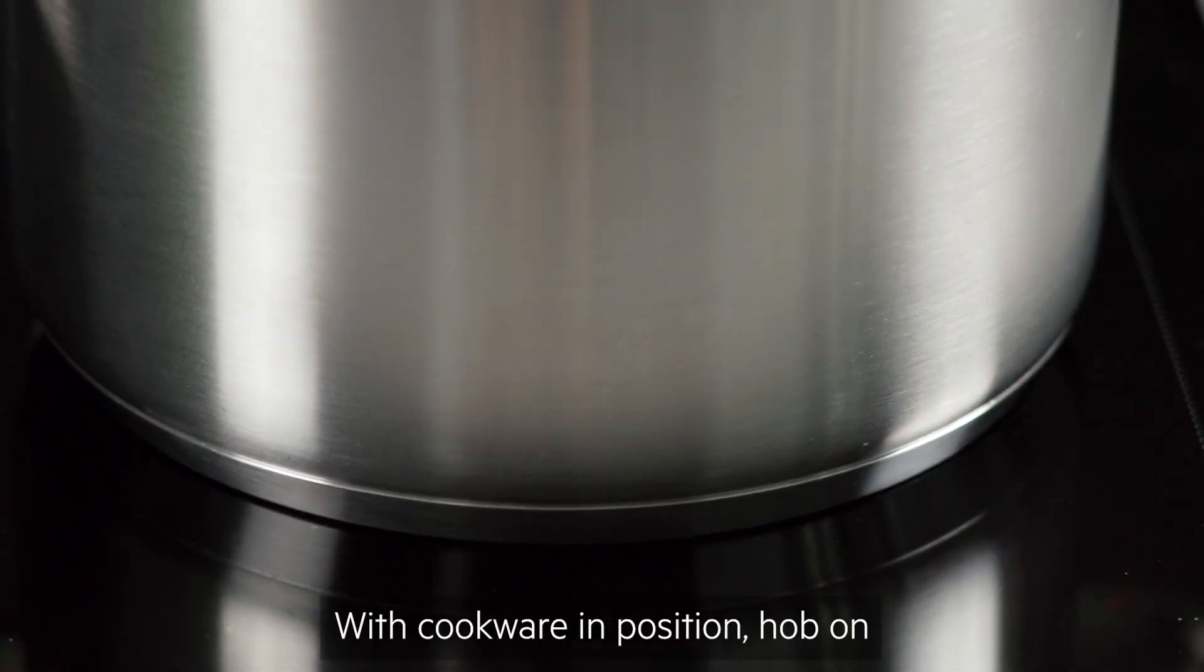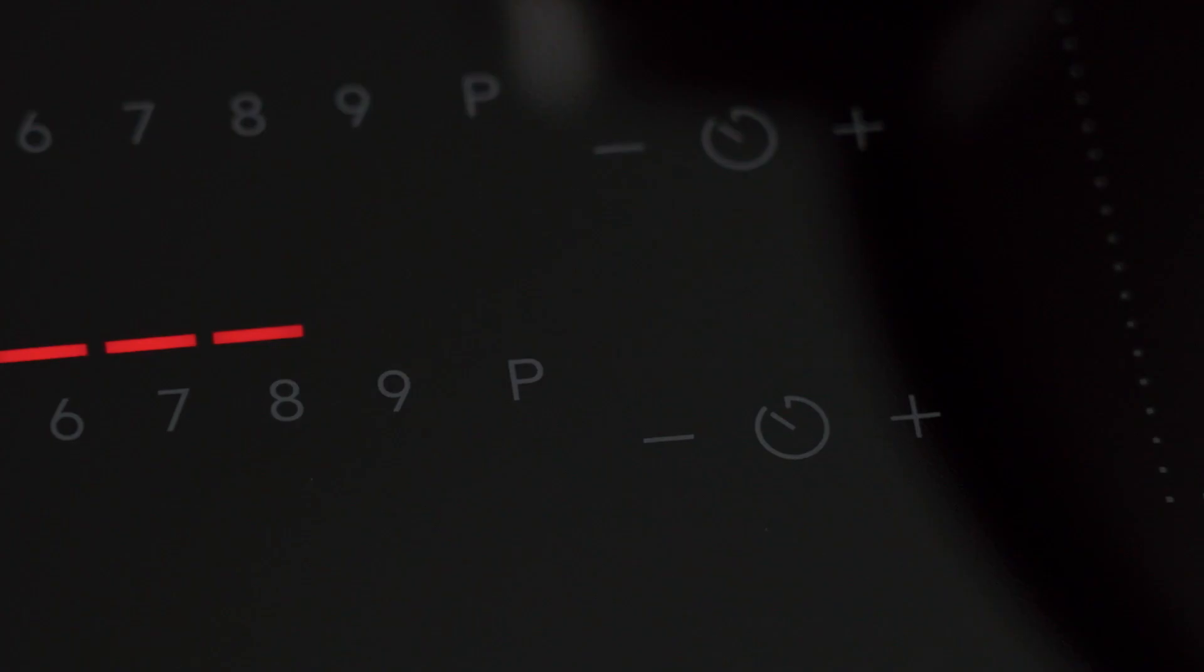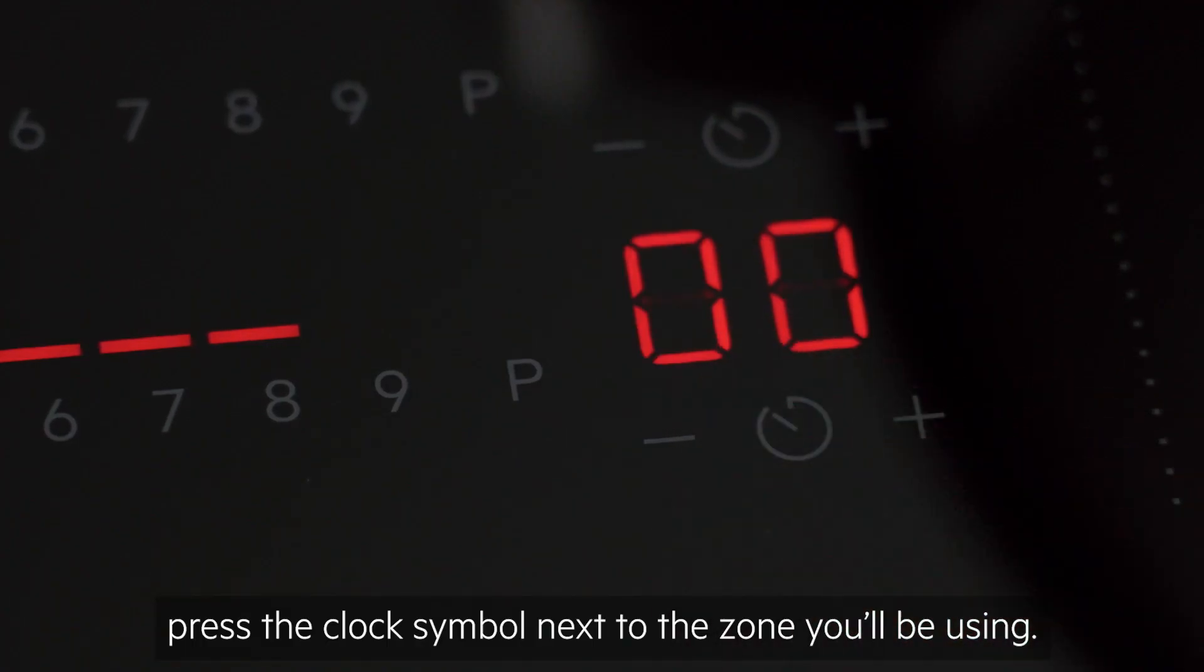With your cookware in position, hob on and the power set to your desired level, press the clock symbol next to the zone you'll be using.